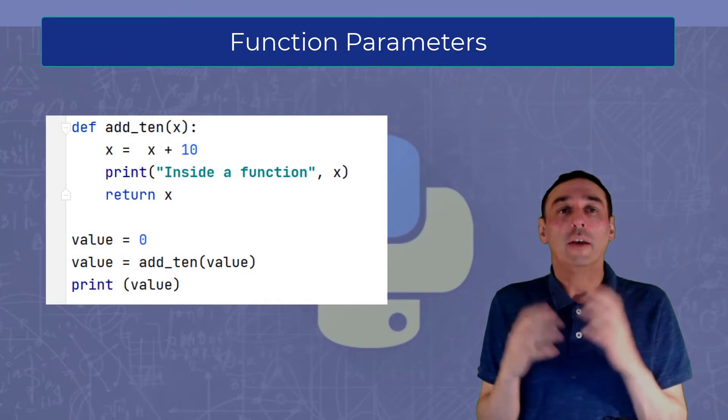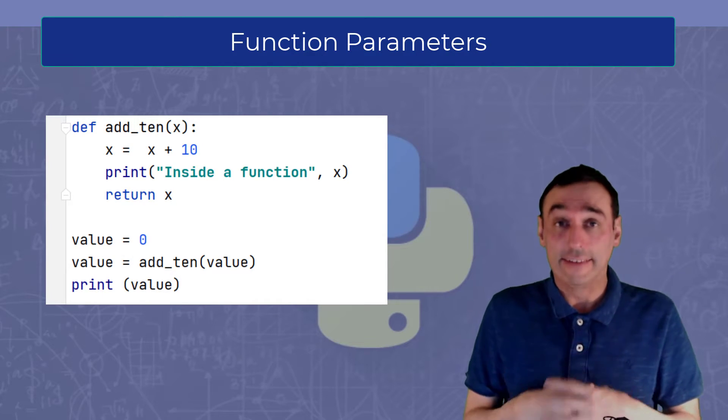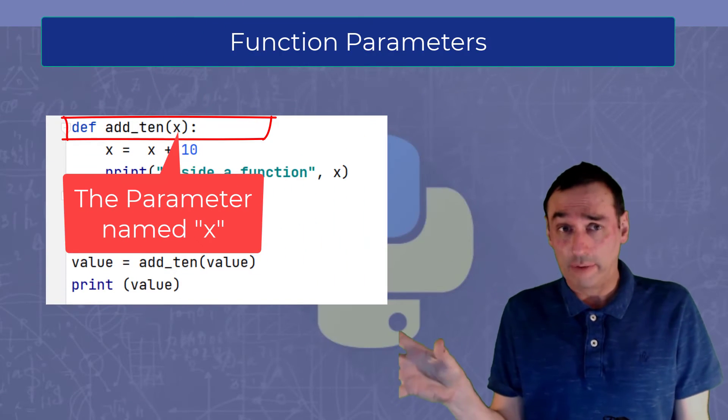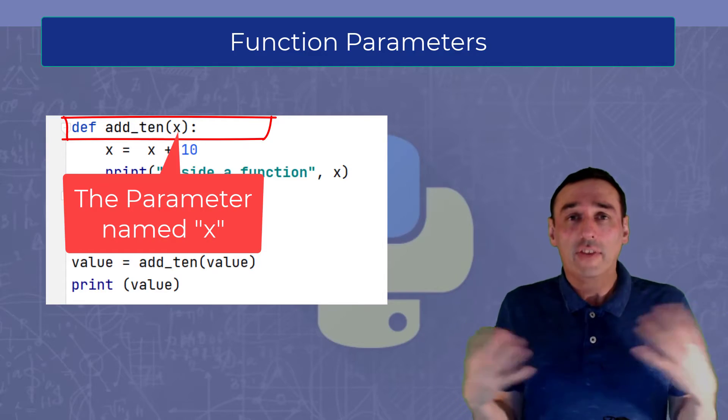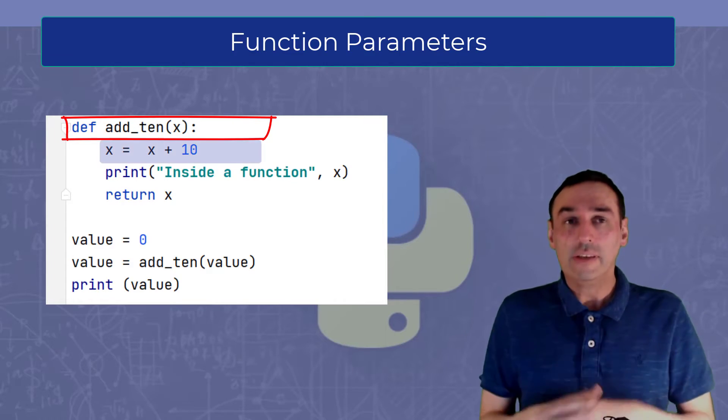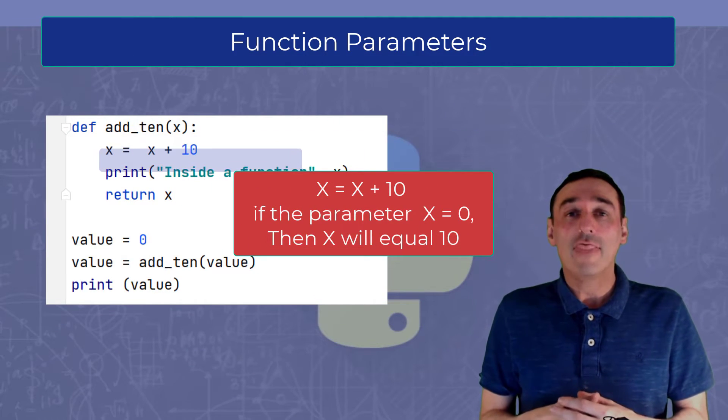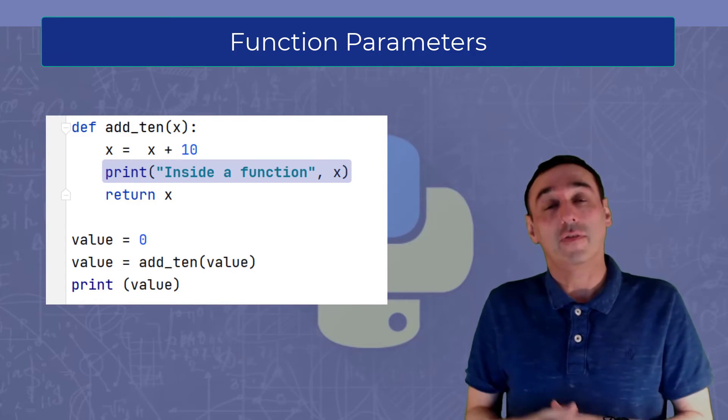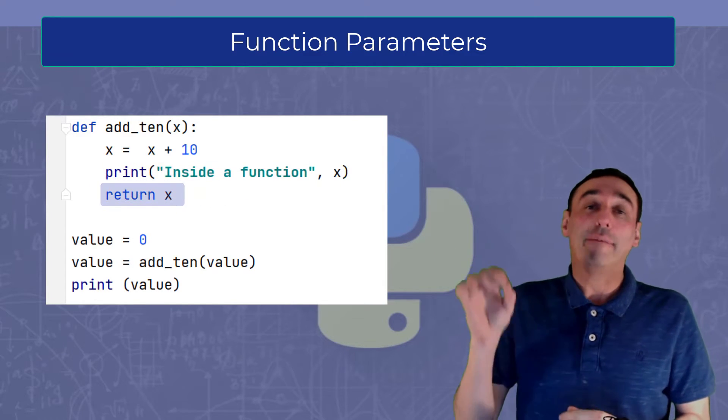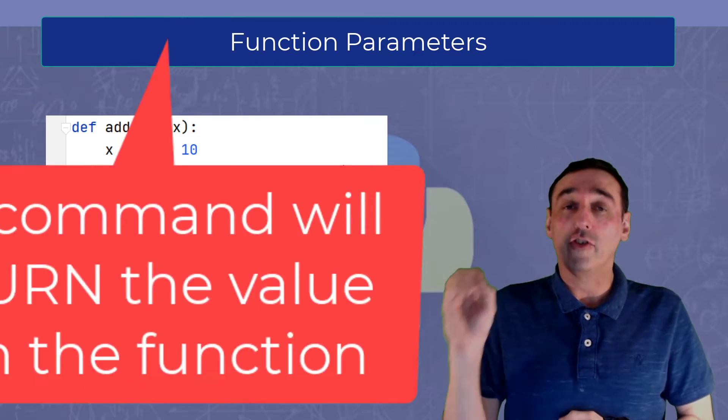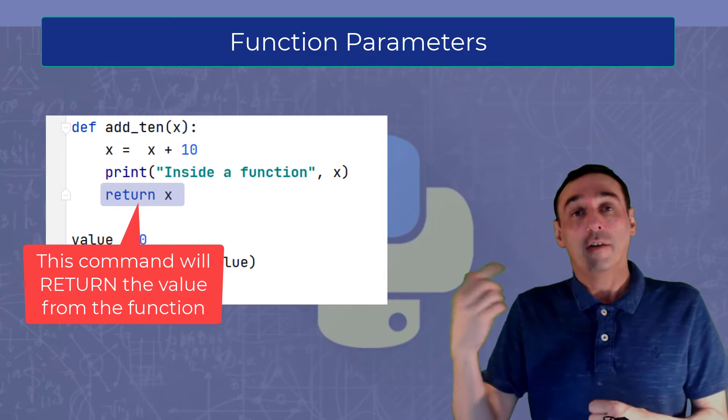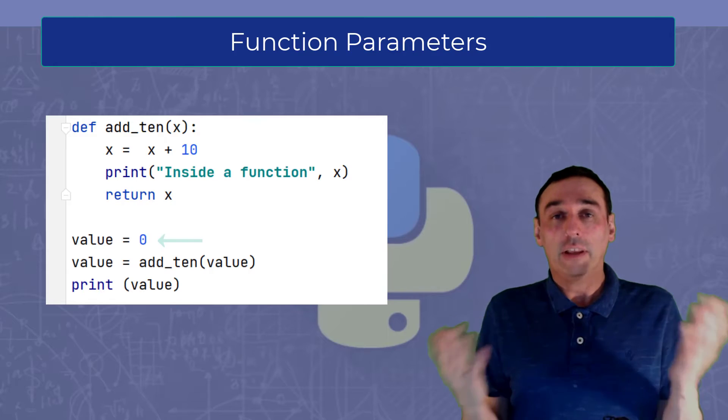What are function parameters? Well, let's take this example program. So we have a function here called add_ten and we take the value of x as the parameter. Then we're going to take that x and add 10 to it. And then once we've added ten, we will print the contents of the variable x, and we will use a special command called return which will basically return the value of x from where it was called from.